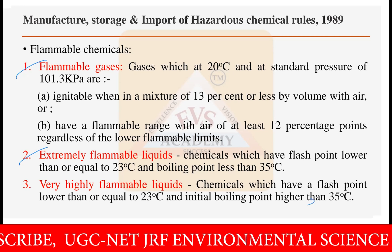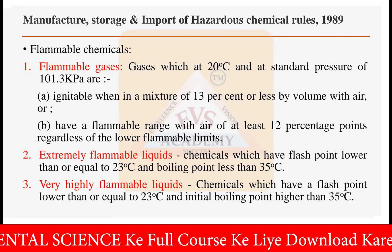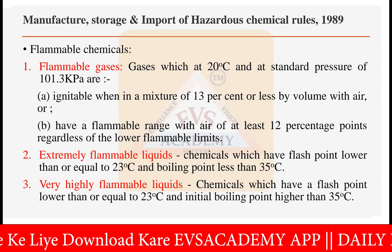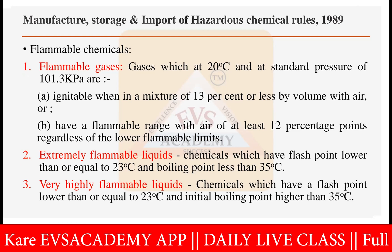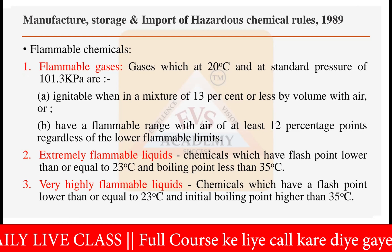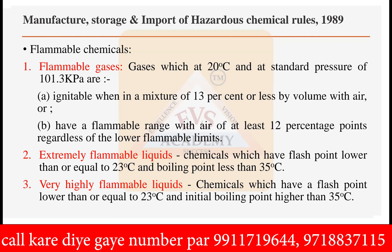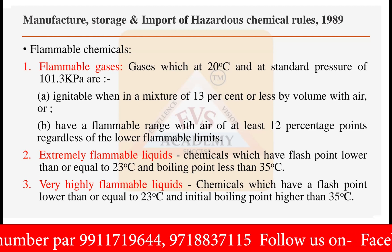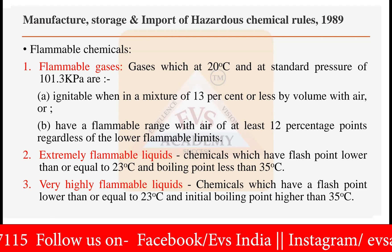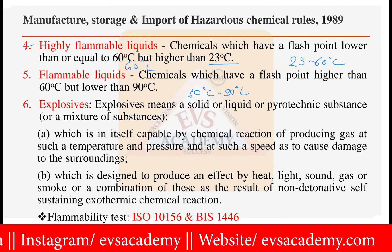Then we have three more categories. Highly flammable liquids have a flash point up to 60 degrees Celsius but higher than 23, so a range of 23 to 60 degrees Celsius. Then, a solid, liquid, or pyrotechnic substance or mixture capable by chemical reaction of producing gas at such temperature, pressure, and speed as to cause damage to the surroundings is called an explosive material.